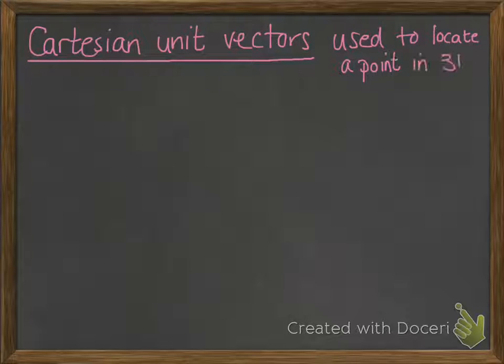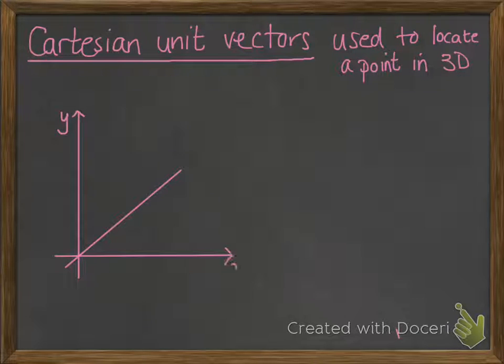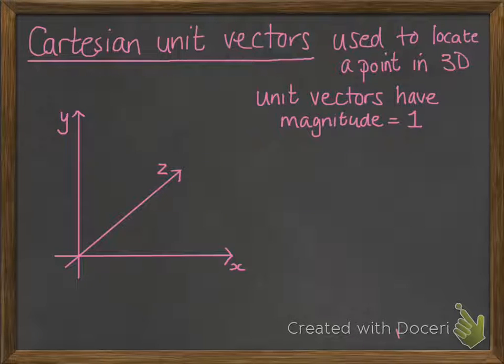So these are used to locate a point in 3D mostly. And unit vectors have a magnitude equal to 1. That's why it's called a unit vector. It's 1 unit long.